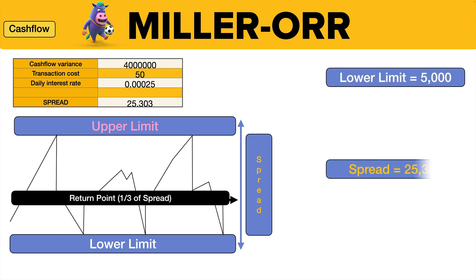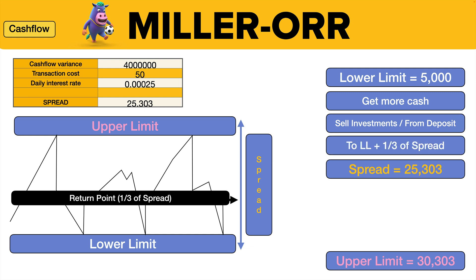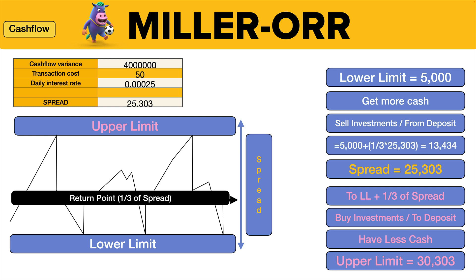So the lower limit was £5,000, the spread was £25,303, and the upper limit was £30,303. When it gets to the lower limit and we haven't got enough cash, we get money out of deposits or sell some investments. How much? Enough to get us back to the return point, which is the lower limit plus one third of spread. At the upper limit we've got too much cash, so we buy investments or send money to the deposit account — enough to get us to the return point, which came to £13,434.